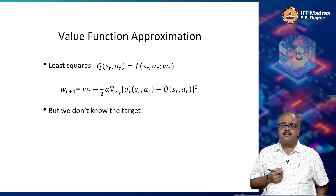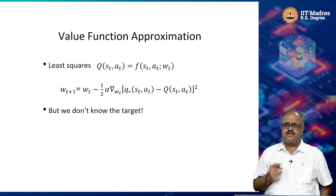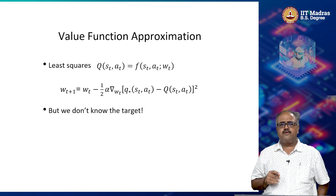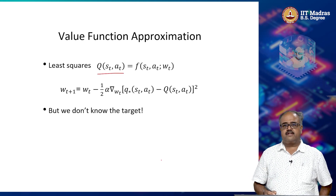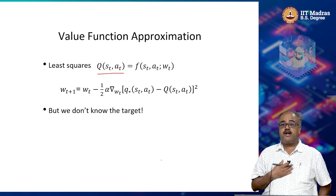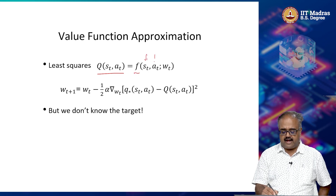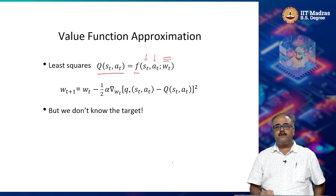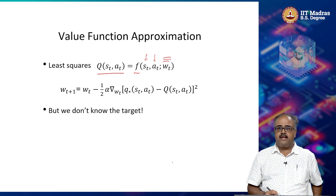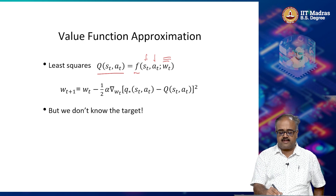Let us look at how we will handle value function approximation. In most control cases, we will stick with the Q function. We are interested in learning the Q function — we want to learn Q of s_t, a_t. We assume that Q of s_t, a_t is given by some function f that takes s_t and a_t as input and has a set of parameters w_t. These parameters w_t define what the function is, and we have to choose some functional form f.